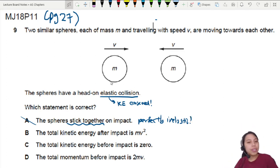B says the total kinetic energy after impact is mv squared. Well, I don't know if that's true or not. I need to do some calculations. So let's pause that one first.